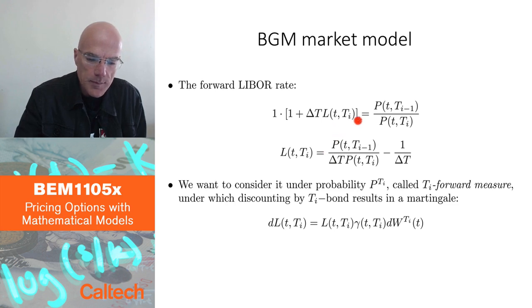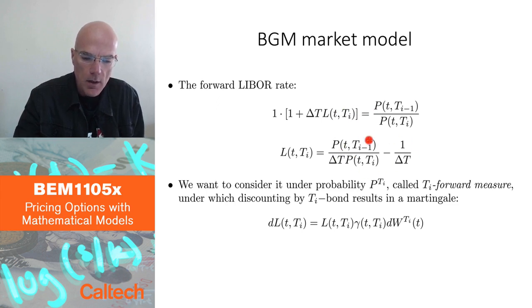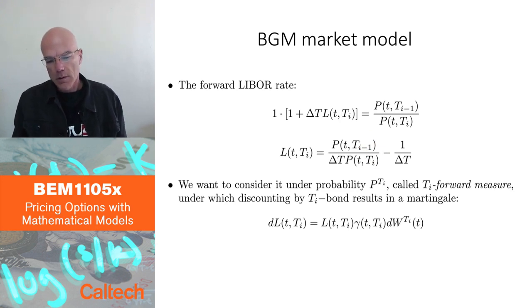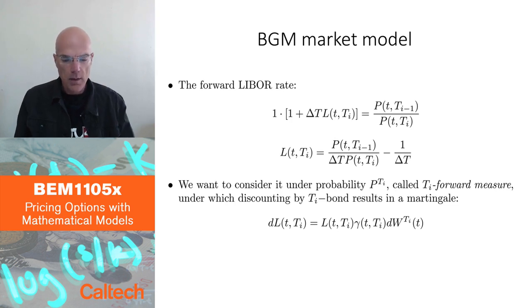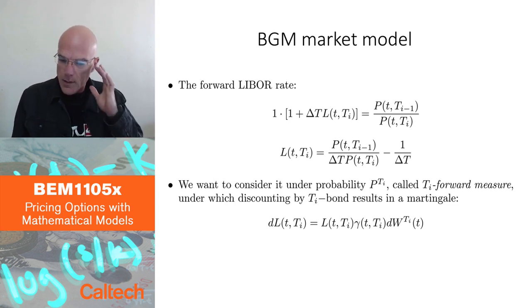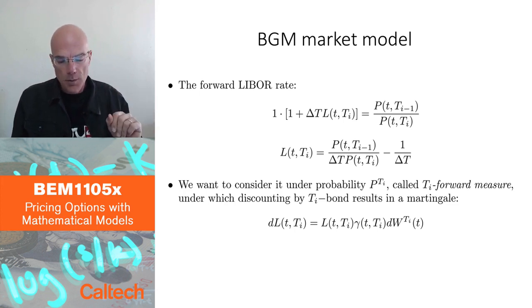If you compute L from here, you get this expression for the LIBOR rate. There are call and put options written on the LIBOR rate, which we will talk about in the next slide. There are simple Black-Scholes type formulas that traders use for pricing those options, or at least for implying volatility when trading those options.